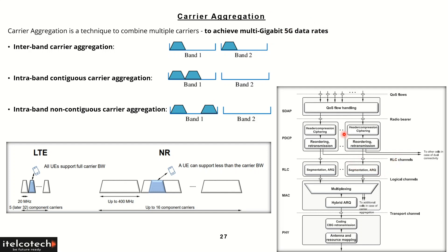On the right side, if you see, this is how at the protocol level we have carrier aggregation done at the MAC layer, and we'll talk about that during the next section on protocols. At the MAC layer, whatever the different carriers that are being allocated and being used, those will be aggregated and multiplexed together to provide the peak data rate.